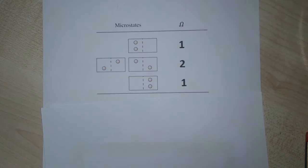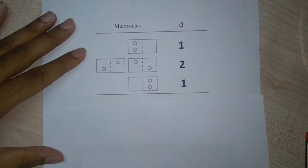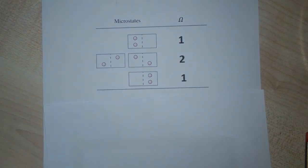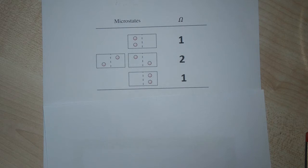Up until now we have defined entropy in terms of heat flow and temperature. A more fundamental definition of entropy involves the probabilities of individual microstates. In a sense, entropy is nothing but a measure of disorder. Let us understand the statistical interpretation of entropy.